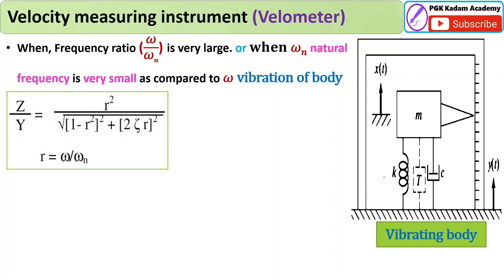Similarly, related to the seismic instrument, using the mass, spring, and dashpot, you can derive this equation: z divided by y equals r-squared divided by the square root of the bracket (1 minus r-squared) squared plus (2 zeta times r) squared. Here r is the frequency ratio omega over omega-n.